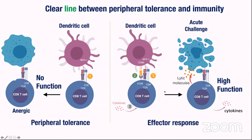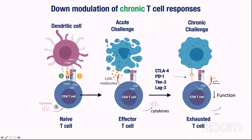By contrast, if T cells get all three signals, they can have much more function. They become effector CD8 T cells that can produce lytic molecules and cytokines, which help them attack infection or cancer. In the context of chronic challenges, it's been appreciated from many labs that CD8 T cells become shut down — they become terminally differentiated. Some people call this exhaustion. This is really a way by which T cells lose some of their functions — they're not completely nonfunctional, but they turn off many functions to preserve homeostasis and avoid immunopathology.